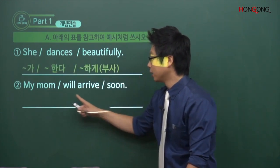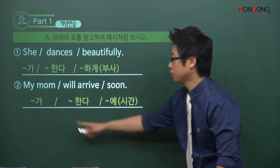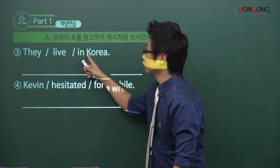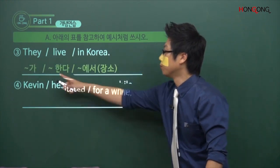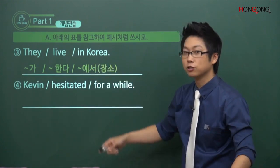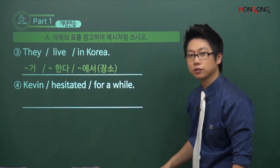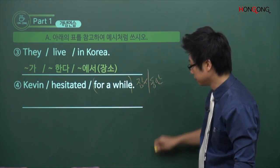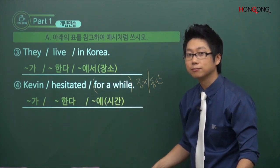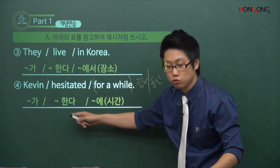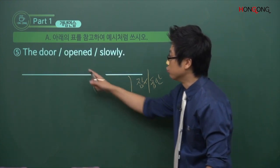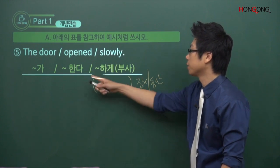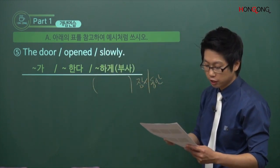엄마가 도착할 것이다, 곧. '곧'이거 뭐라고 했어요? 시간이라고 했죠. 그래서 뭐뭐가 뭐뭐한다, 시간, 이런 식으로 분석을 한 겁니다. 그들은 산다, 한국에. 한국에가 뭡니까? 장소죠. 뭐뭐가 뭐뭐한다, 장소. Kevin은 망설였다, 잠시 동안. 잠시 동안이라는 표현은 시간이죠. 뭐뭐가 뭐뭐한다, 시간. 문이 열렸다, 천천히. 천천히, 뭐뭐하게 부사죠. 부사는 문장 구성요소에 들어가지 않는다고 했습니다.